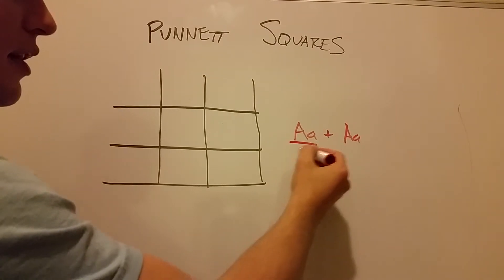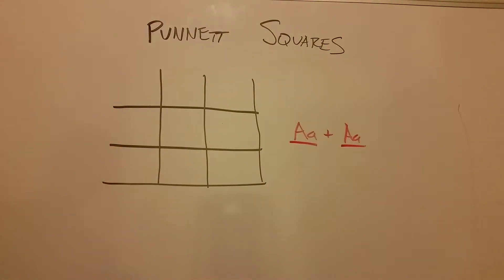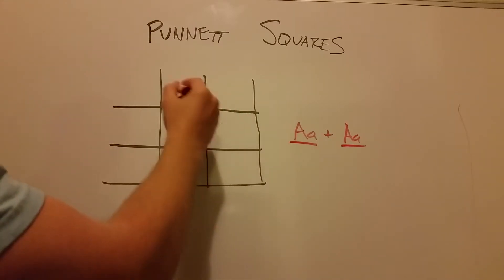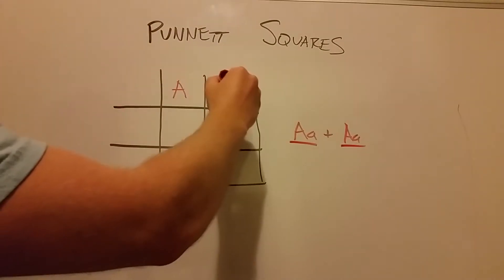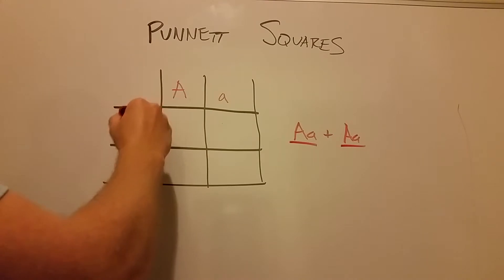So our first example would be heterozygous and heterozygous mixing together. So one parent I'm going to take and put up here on the top, and that parent I'm going to put on here on the side.